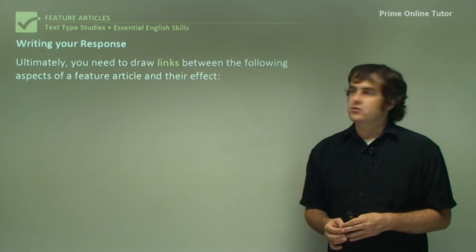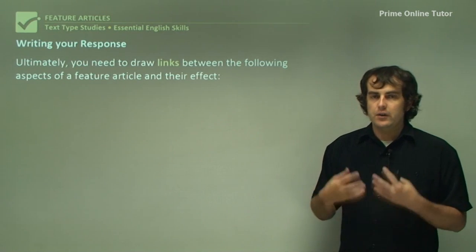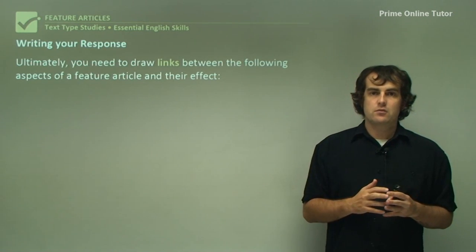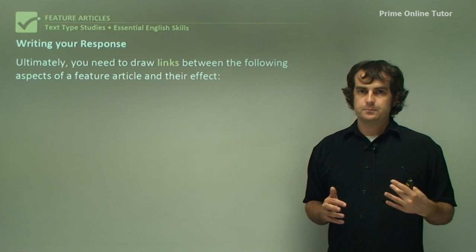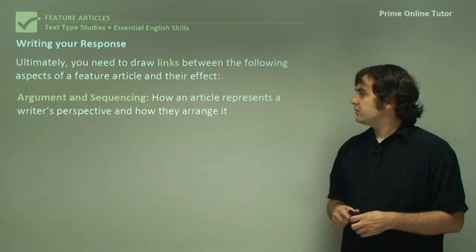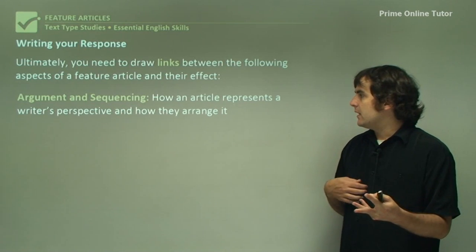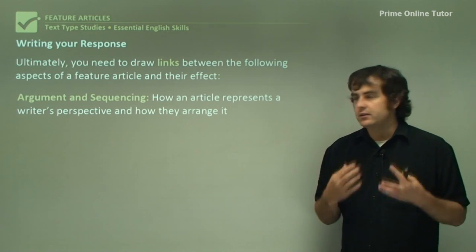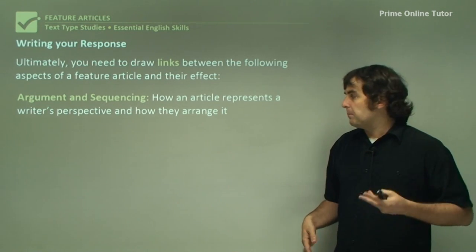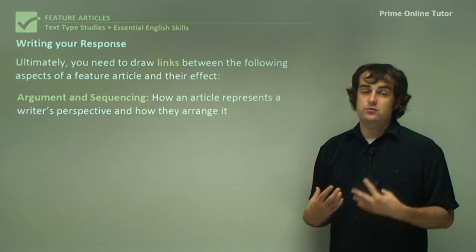When writing your response to a feature article, you need to draw links between what the article presents, the effect of what is written, and how it connects with you as the reader. The main purpose of a feature article is to take someone's perspective and deliver it to the audience. Argument and sequencing — how an article represents and arranges the writer's perspective — is important, and you need to state the writer's perspective clearly and explain how they're trying to deliver it.